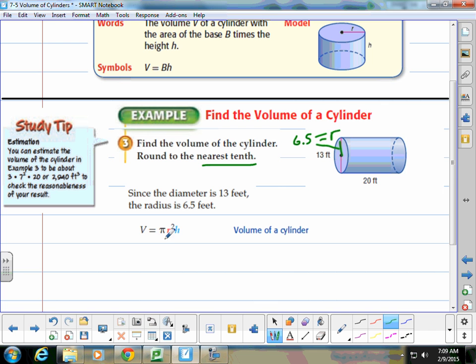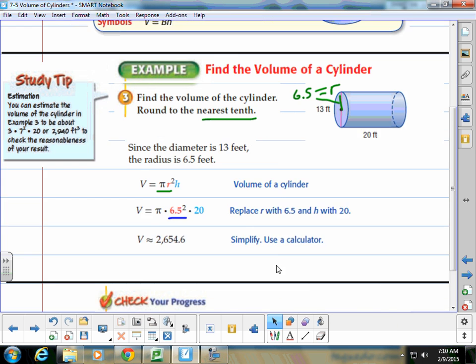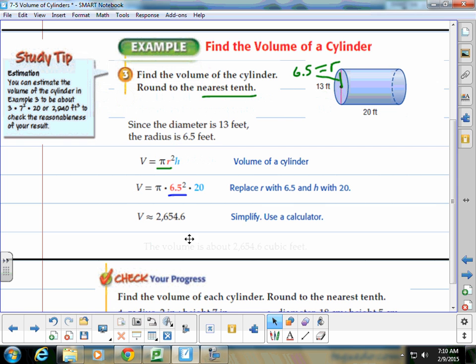So this is our formula. Since the base is a circle for a cylinder, we actually use the formula for the area of a circle and then multiply that times the height. So we plug in what we know about the radius, plug in 6½. Then we use our PEMDAS, and we know that exponents would come first. And then we multiply by pi and multiply by 20. So we get that. We round it to the nearest tenth. So the volume is about 2,654.6 cubic feet.